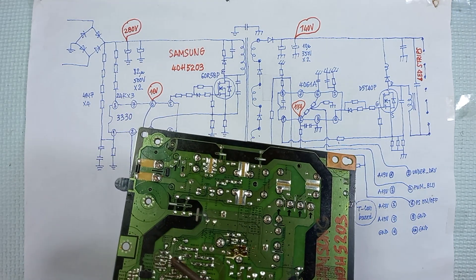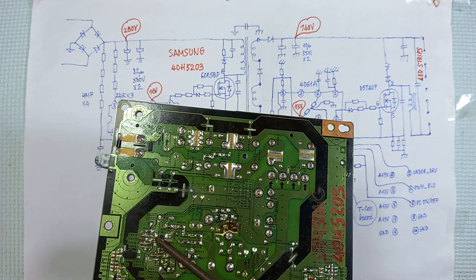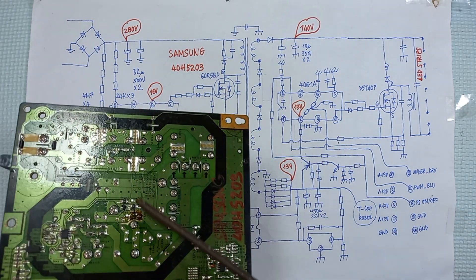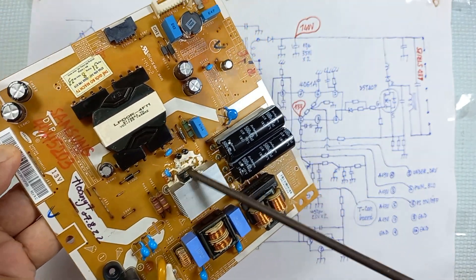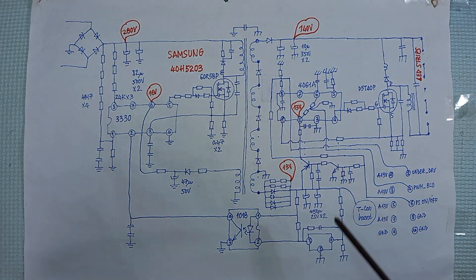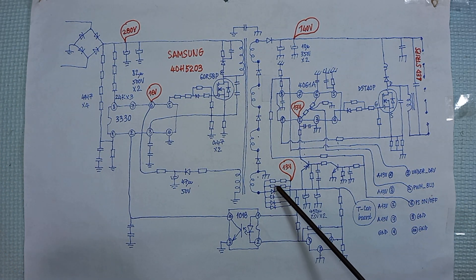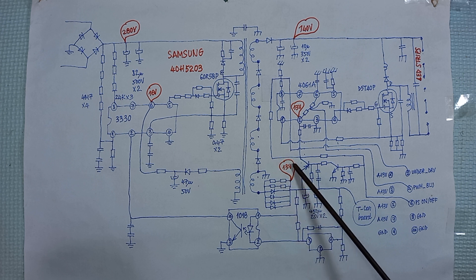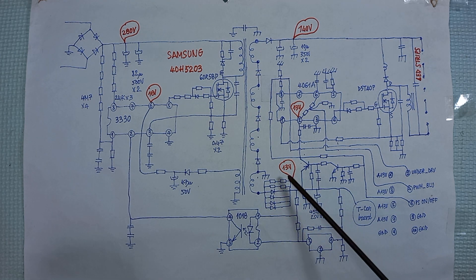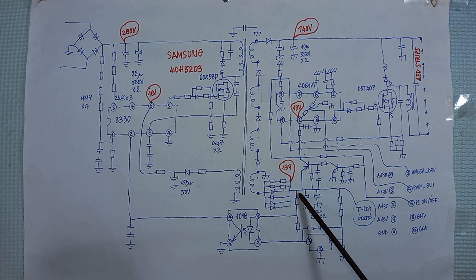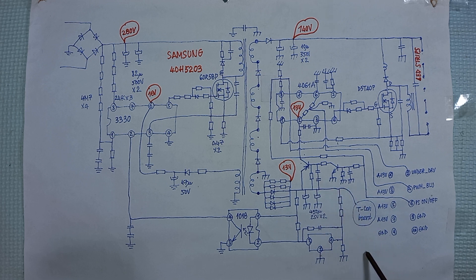This is the oscillation IC. The four diodes will rectify the voltage to 13 volts and filter by the two capacitors. The 13 volts will supply power for this IC, for the T-Con board, and some parts of the main board.